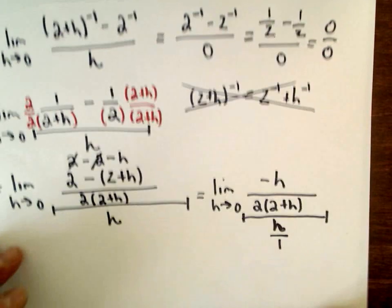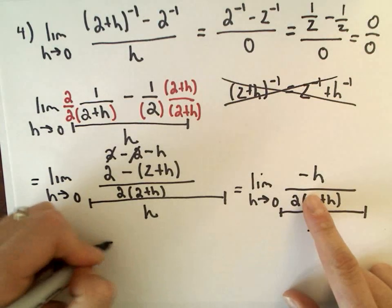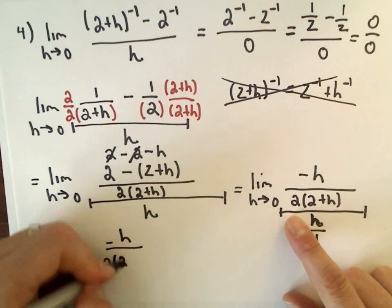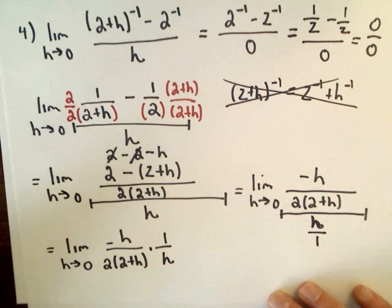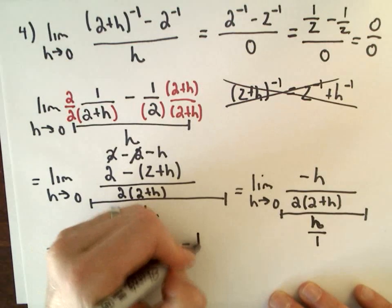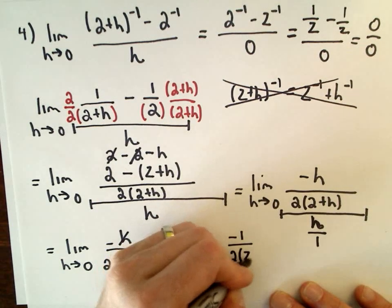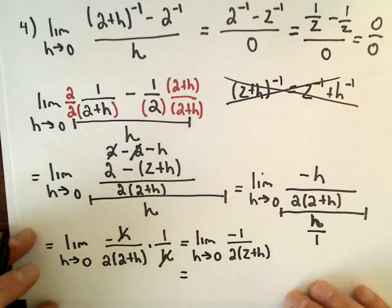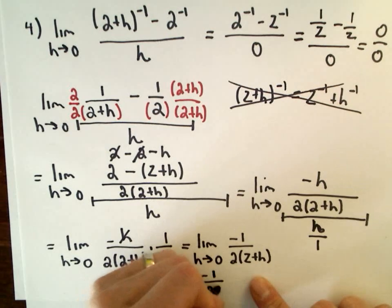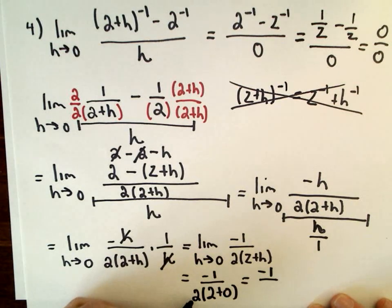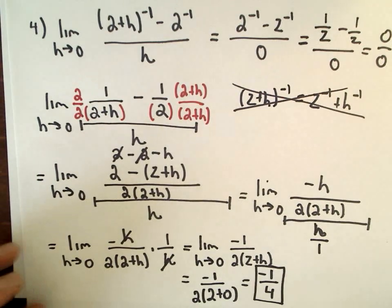I'll write h as h over one so I can flip and multiply. So I've got negative h divided by two times (two plus h), and I was dividing by h over one — equivalently, multiplying by one over h. Now the h's cancel and I'm left with the limit as h approaches zero of negative one over two times (two plus h). Substituting h equals zero gives negative one over two times two, which is negative one-fourth.